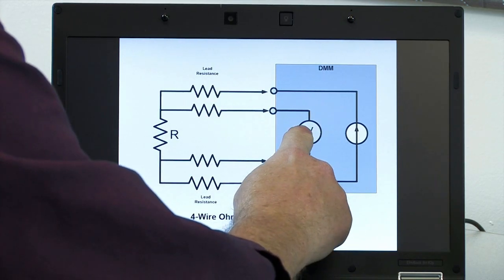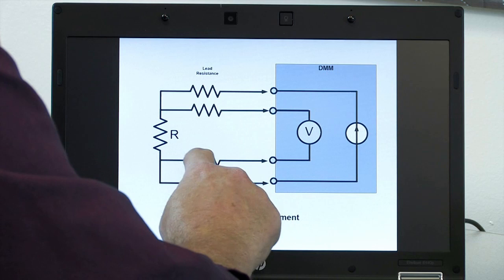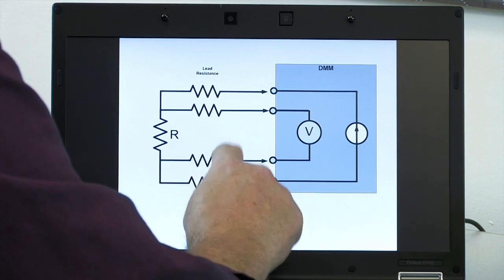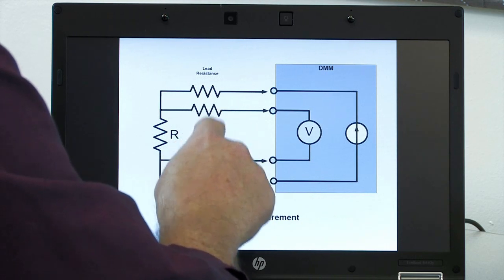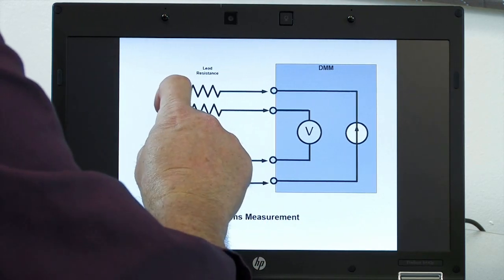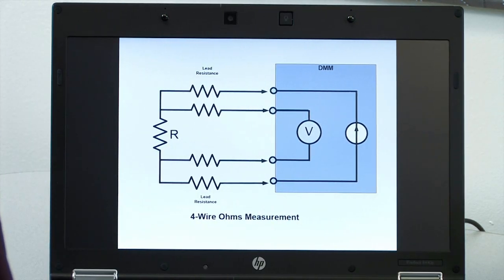But the voltmeter, because it's a very high input impedance, there's essentially no current flowing through these two lead resistors and so you don't get the extra voltage buildup across these two resistors. You just measure the voltage across the unknown resistor.